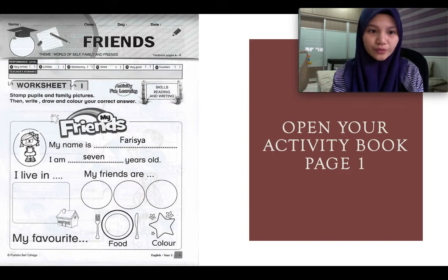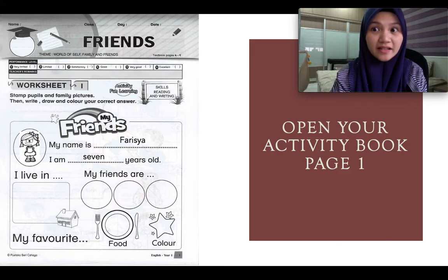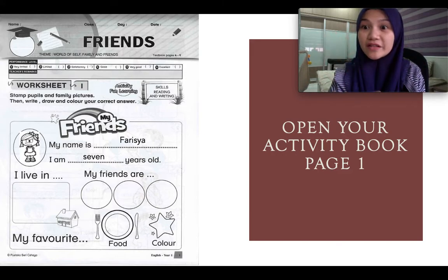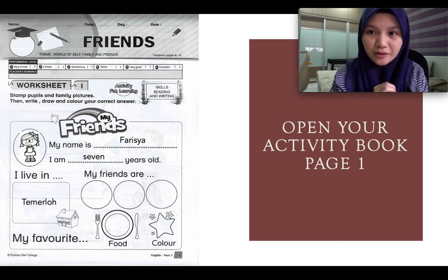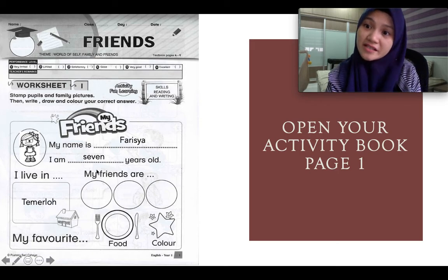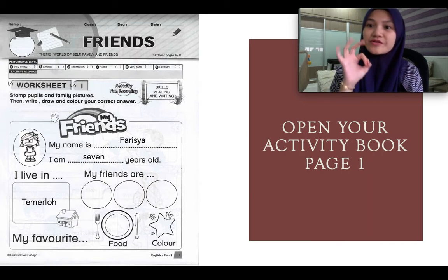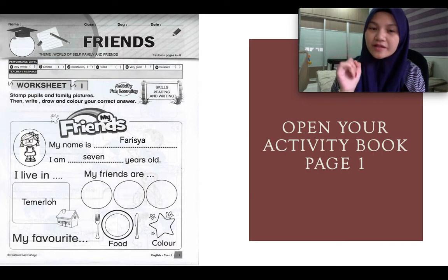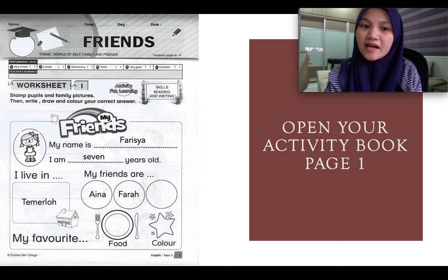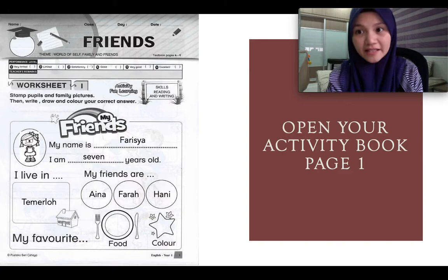I live in — we all live in Taman Lau. Then, who are your friends in the class that you are very close to? Choose three of them. For example, Farisha's best friends are Aina, Farah, and Honey.